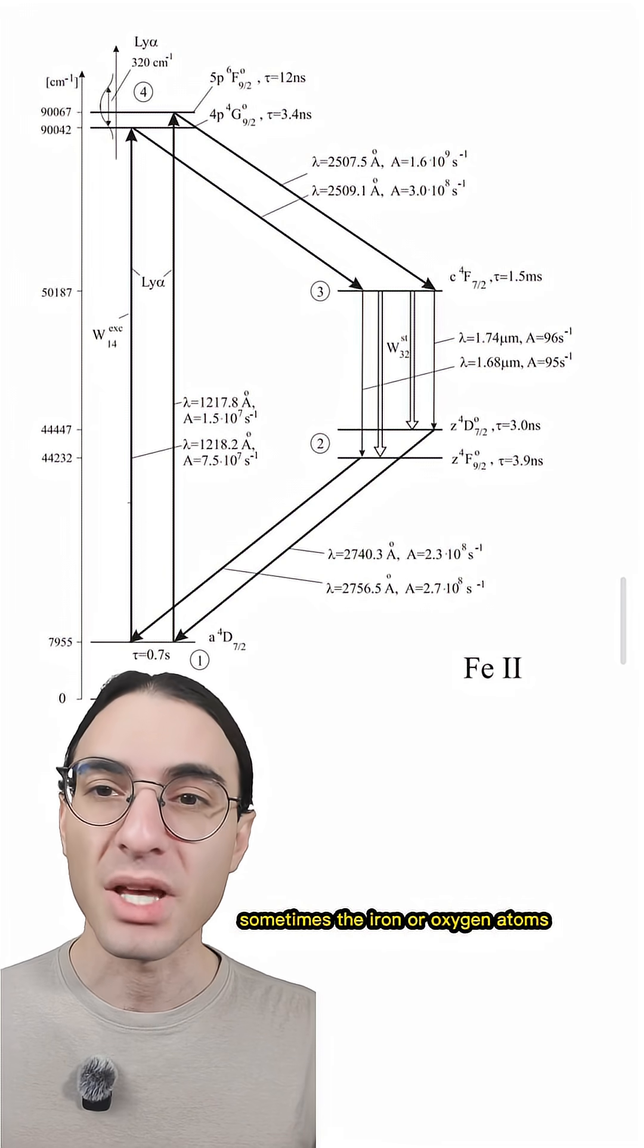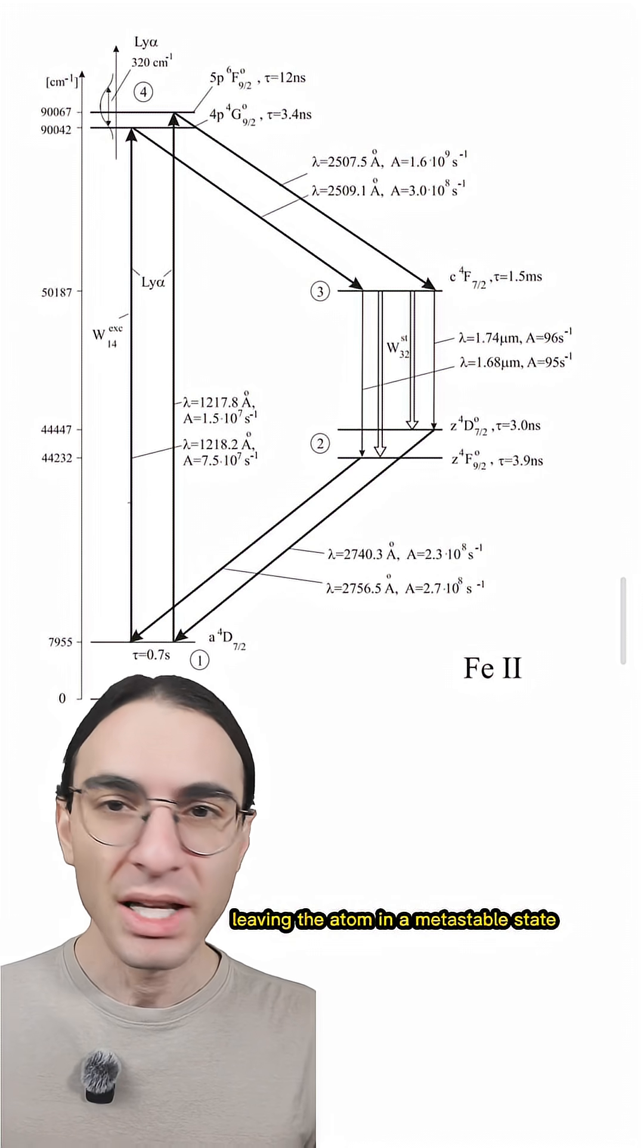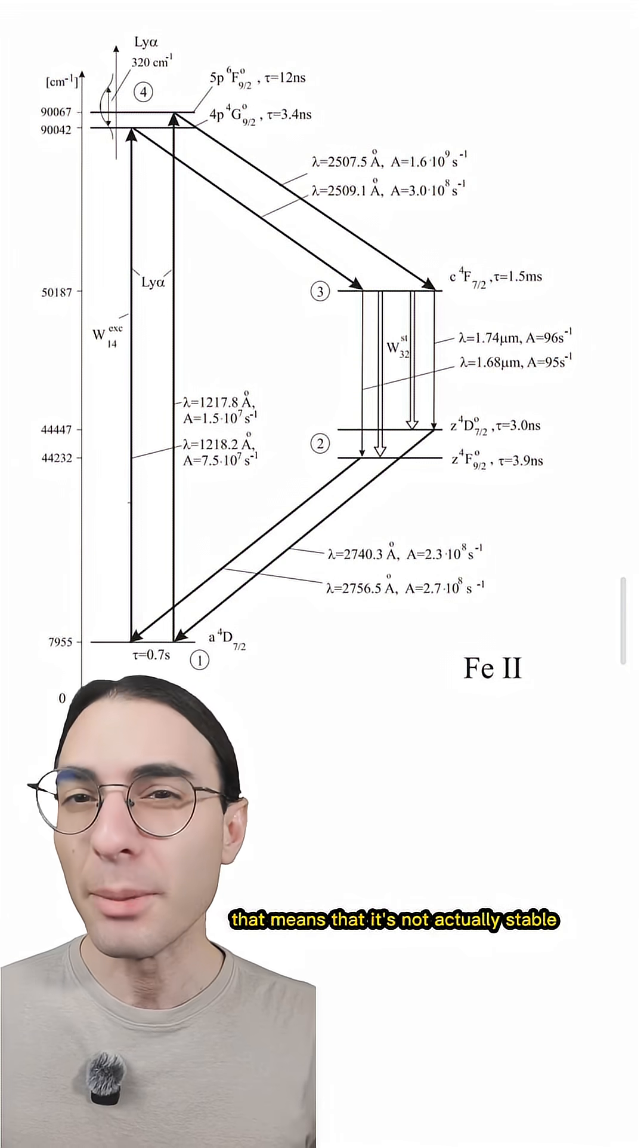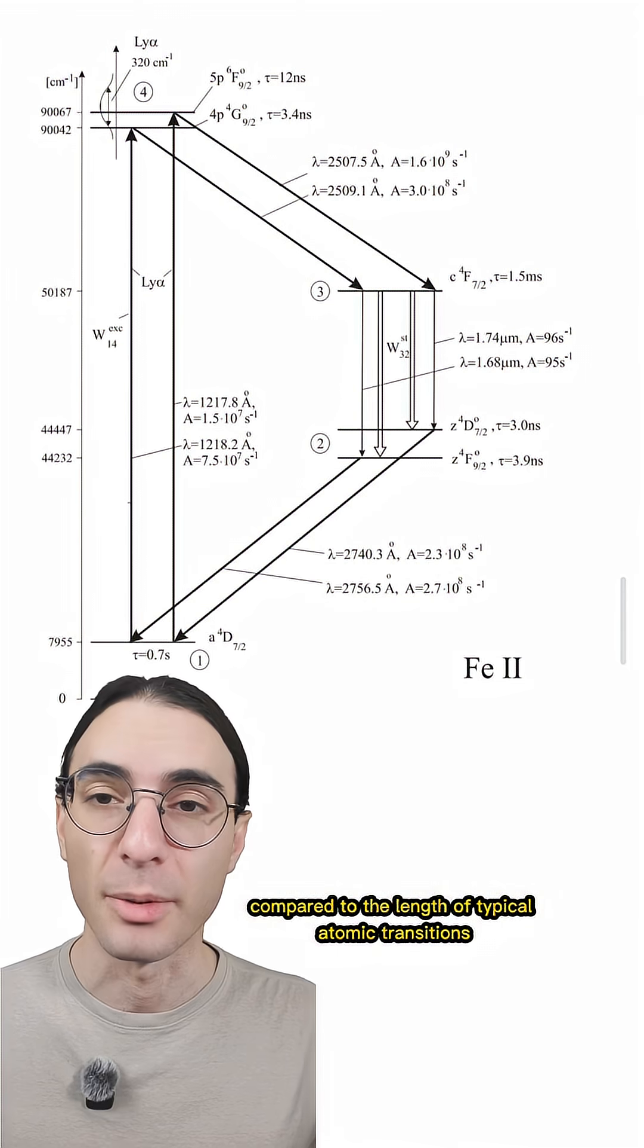Sometimes, the iron or oxygen atoms emit a slightly less energetic photon, leaving the atom in a metastable state. That means that it's not actually stable, but it'll stay in that unstable state for a long time compared to the length of typical atomic transitions.